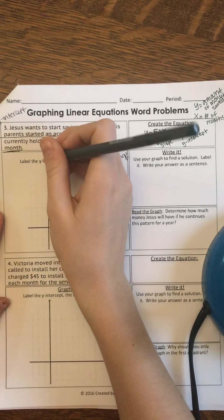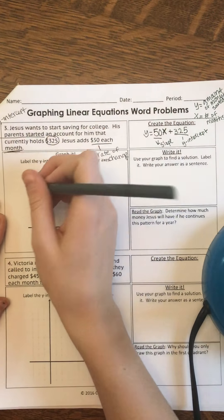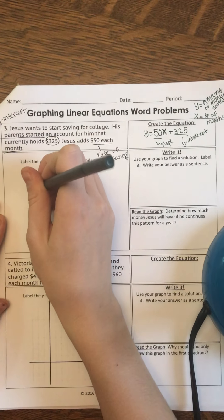First I'm going to label my axes. This is Y because it's vertical. This is X because it's horizontal. Remember, I'm also going to write what Y stands for. Amount of money saved. And X is number of months.